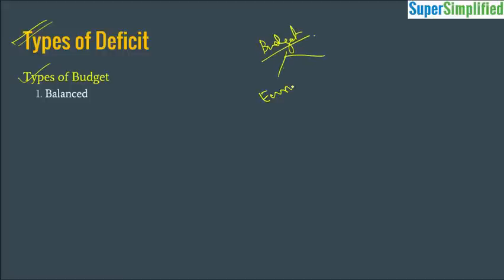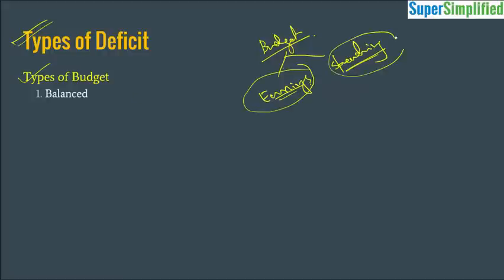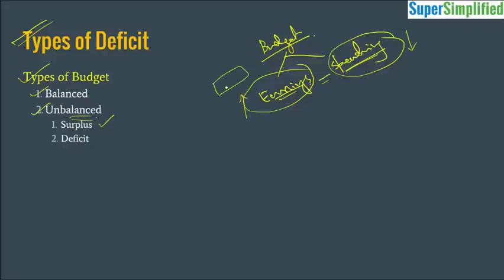The annual budget of any government contains two parts: first, the earnings — covering taxation and all those things from where the government fetches money — and second, the spending on policies, programs, and running expenditure. When earnings equal spending, we call it a balanced budget, but that rarely happens. An unbalanced budget can go two ways: a surplus budget when earnings are more than spending, and a deficit budget when spending is more than earnings.